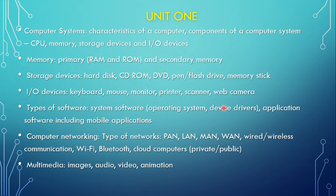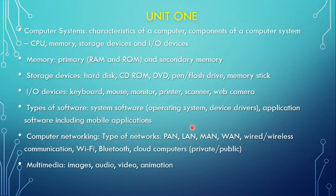In unit one, you have to cover a computer system. In the computer system, you have to study the characteristics of a computer, components of a computer, CPU, memory, storage devices, input/output devices, and peripheral devices. Memory has two types: primary memory and secondary memory. Primary memory refers to RAM and ROM, and secondary memory includes pen drives, hard drives, and memory cards. You just need a basic idea about these things.